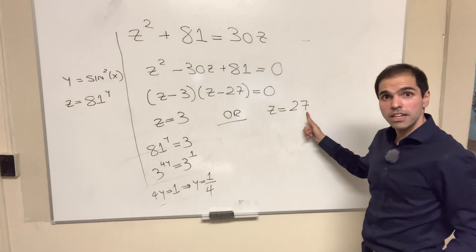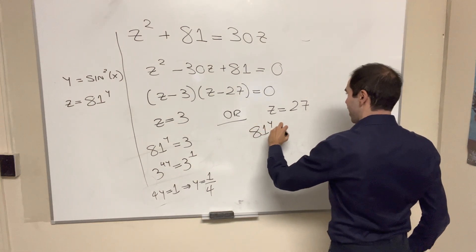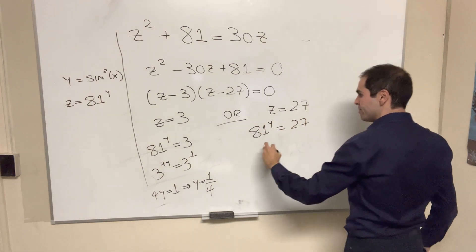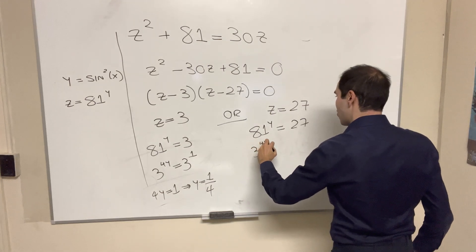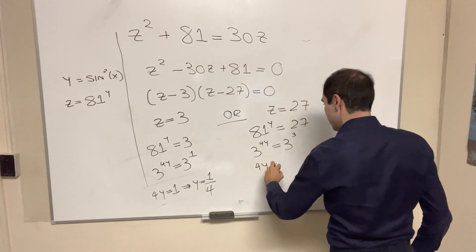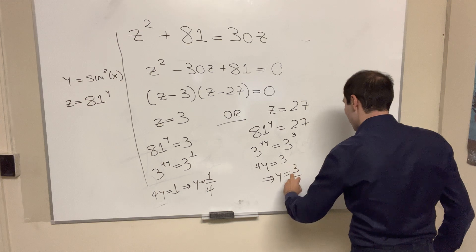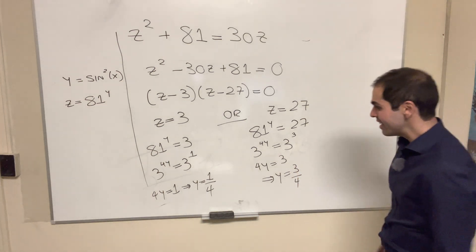Or, same spiel with 27. So 81 to the y equals 27. So 3 to the 4y equals 3 cubed. So 4y equals 3. So y is 3 4ths. Okay, very good.